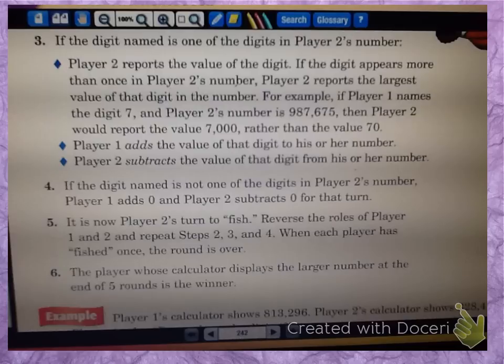So what you're going to do is you're going to add that value of that digit to your number. So what that means is you have a number entered on your calculator already that you picked. If your partner guesses part of your numbers by one of the digits, then depending on whose turn it is, you're going to add the value of that digit to your number or subtract the value of that digit from your number. So if the digit named is not one of the digits,